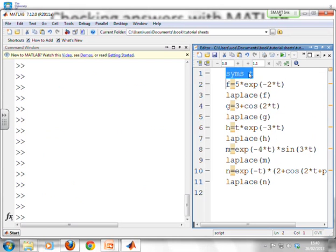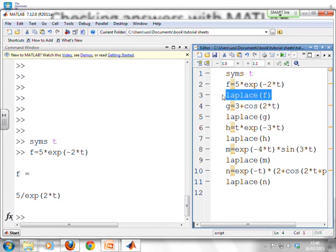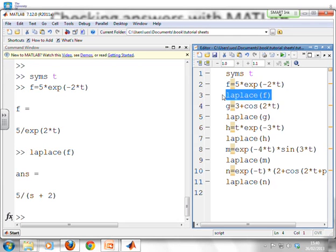First, create a symbolic variable t. Now I'm going to enter the function f. Now you can see f equals 5 e to the minus 2t. And then I can use this Laplace function, Laplace f. And what do you notice? 5 over s plus 2. Is that the answer you got when you tried it on pen and paper? If you've got the same answer as you get from MATLAB, you're pretty confident you're doing both correct.